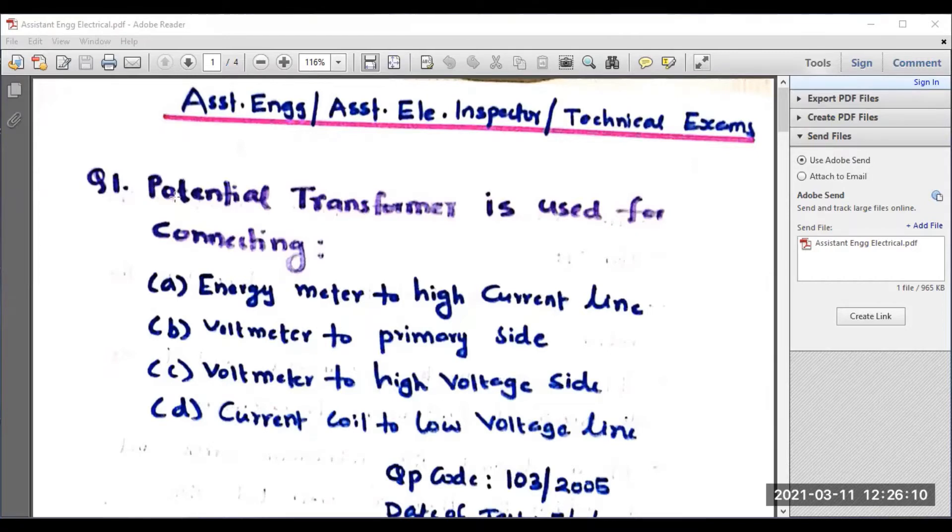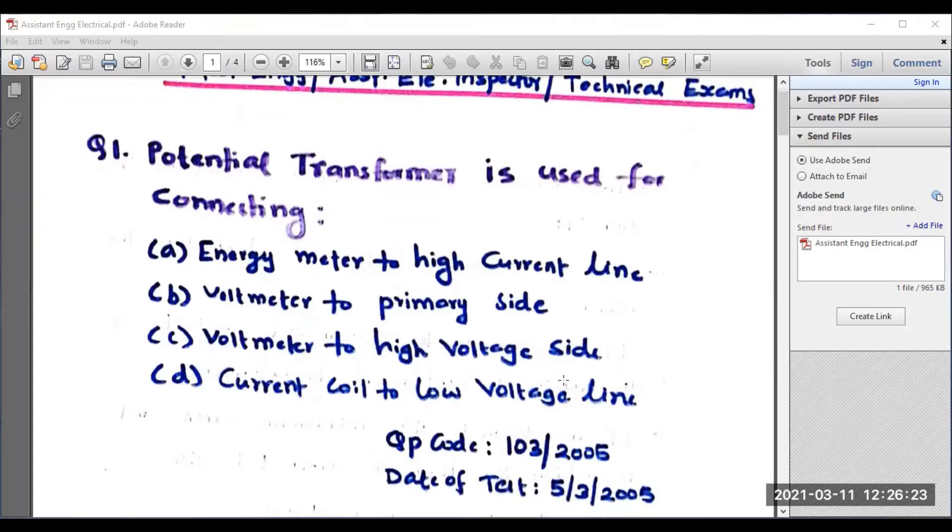Let me move on to the first question. Potential transformer is used for connecting: Option A, energy meter to high current line, voltmeter to primary line, voltmeter to HV side, current coil to low voltage side. I have mentioned the question paper code and the date of examination as well. Potential transformer is used for connecting voltmeter to high voltage terminal because it is not possible to measure the high voltage directly with the help of voltmeter. So, it is better to go for potential transformer or voltage transformer.